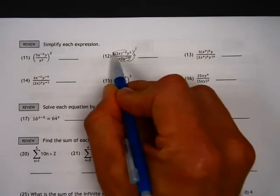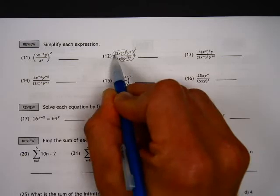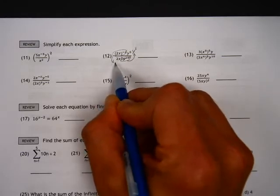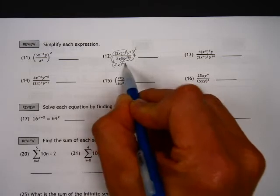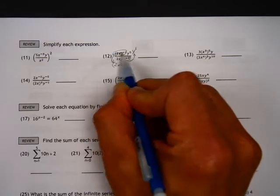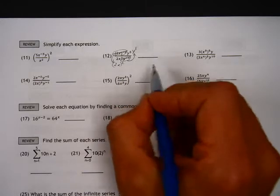This thing here, raised to the negative second power. Let's take the entire thing, move it down here. And now it's a 2x to the positive second power. But we need to make sure that we have adjusted.